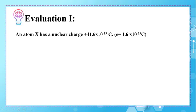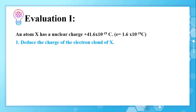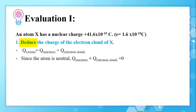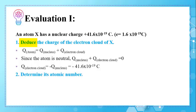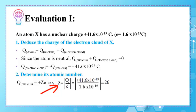In the next application, you are given the nuclear charge of atom X as +41.6 × 10⁻¹⁹ C, as well as the elementary charge. Part 1: deduce the charge of the electron cloud of X. Since the atom is neutral, the charge of the nucleus plus the charge of the electron cloud equals zero. Therefore, the charge of the electron cloud equals −41.6 × 10⁻¹⁹ C. Part 2: determine the atomic number. Using Z = |Q| / E, Z = 41.6 × 10⁻¹⁹ / 1.6 × 10⁻¹⁹ = 26.